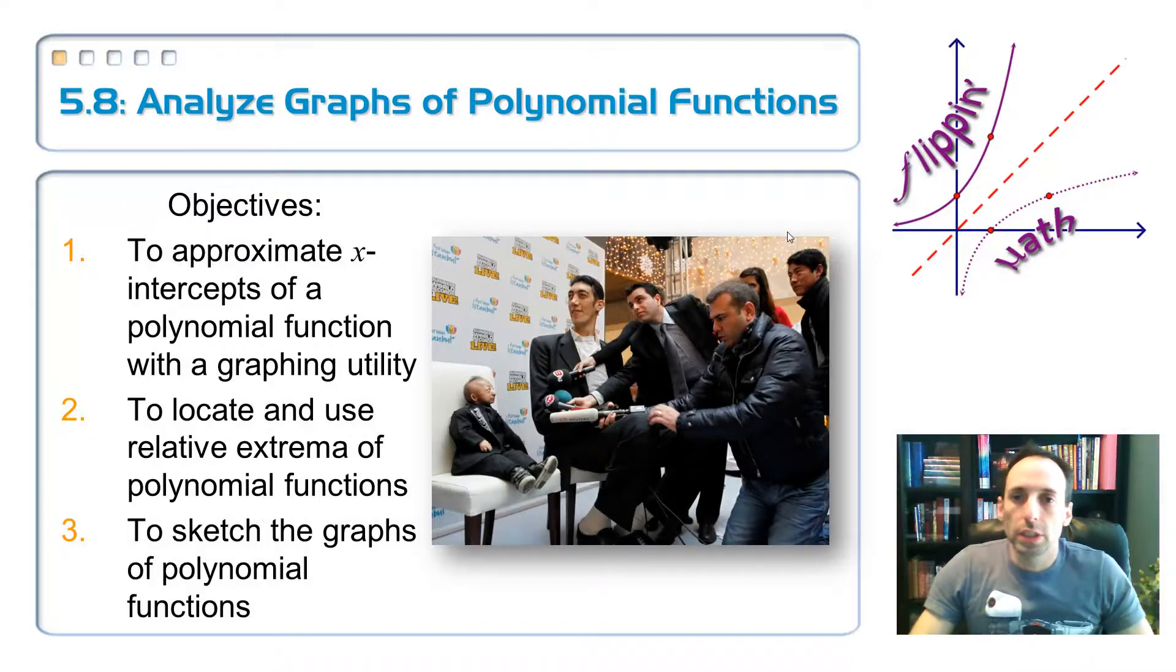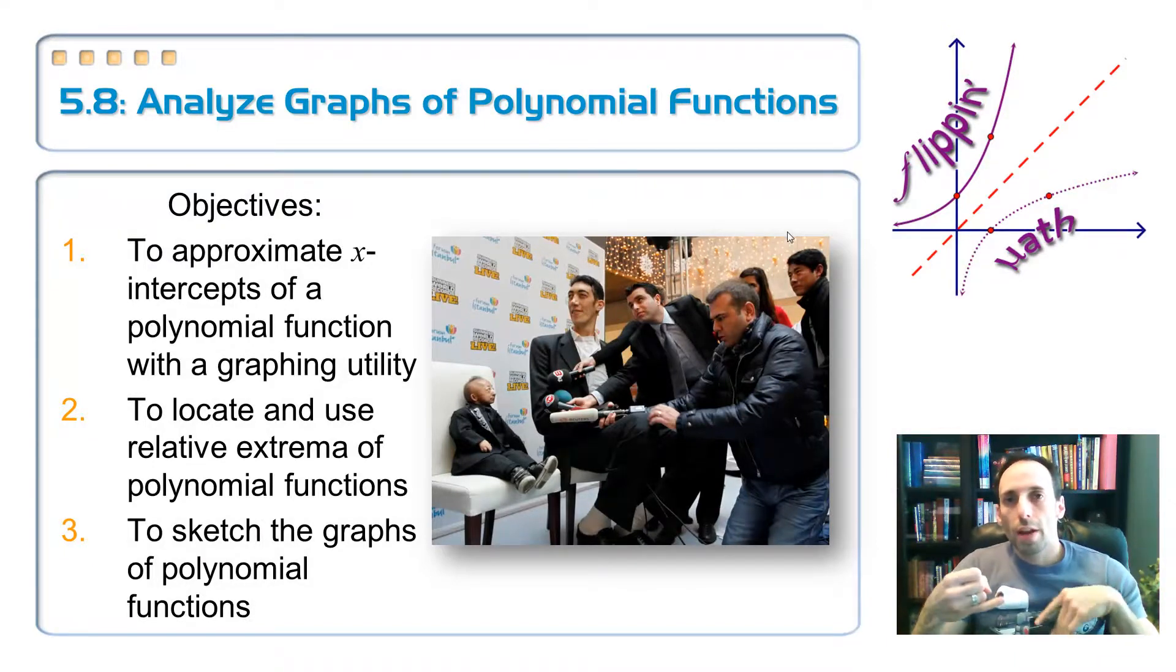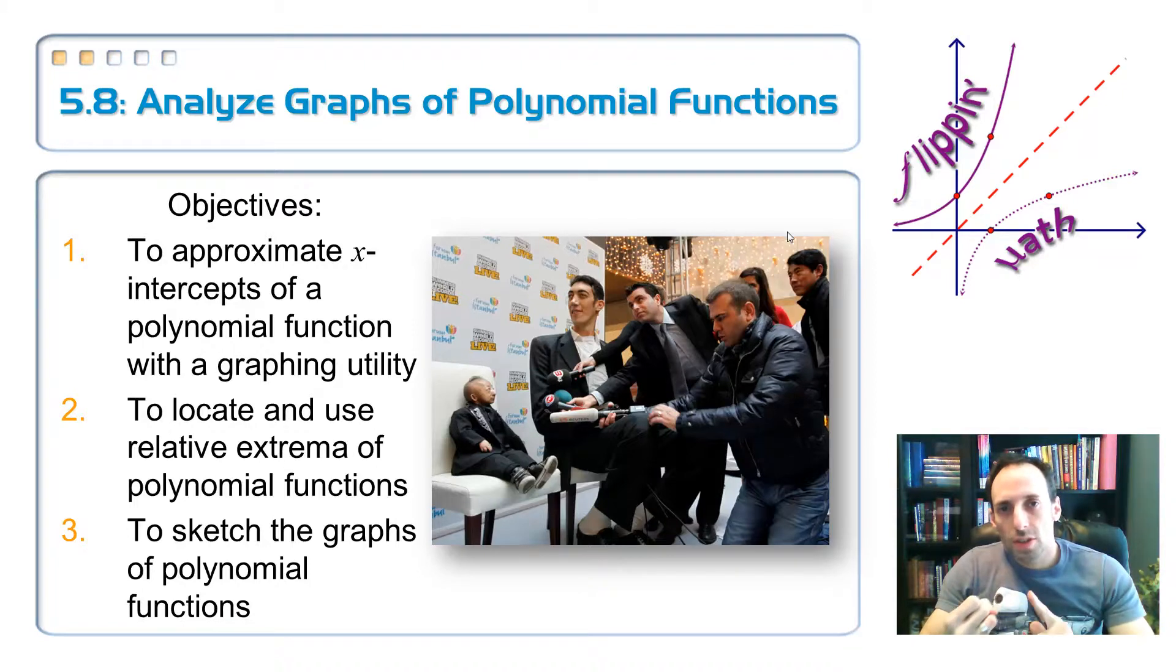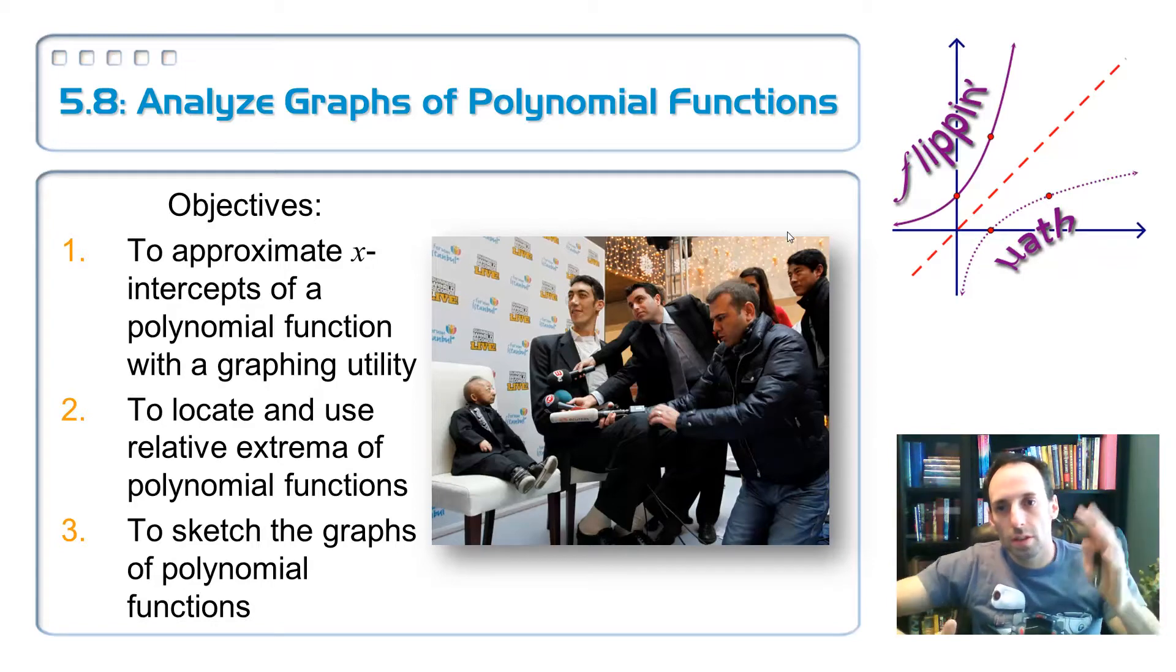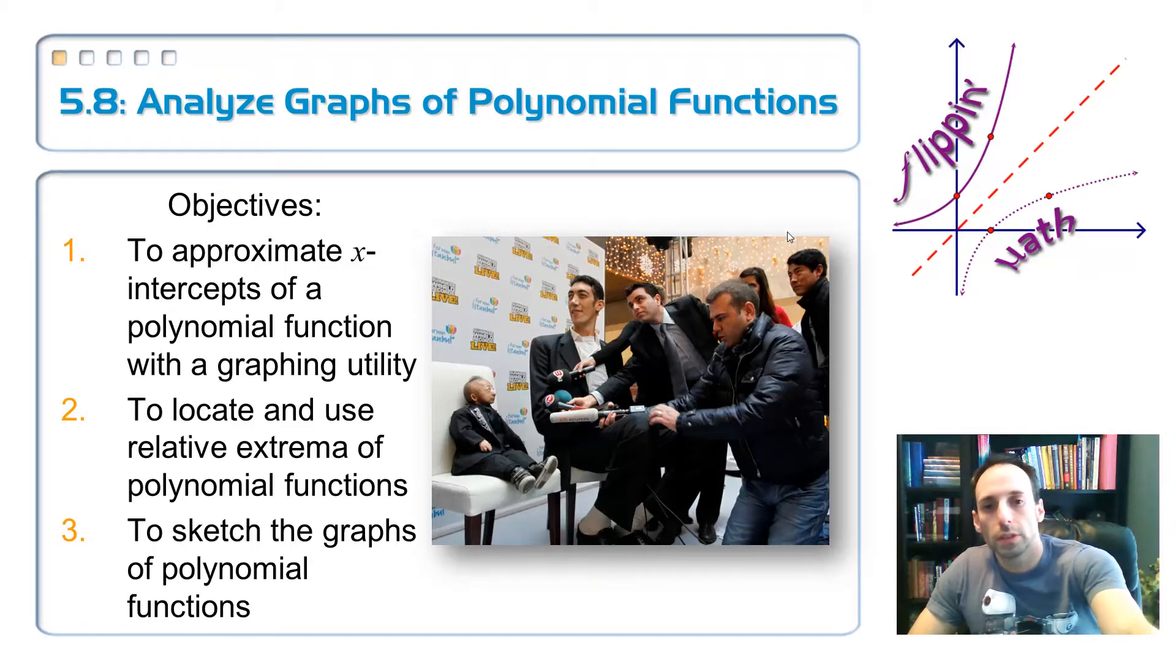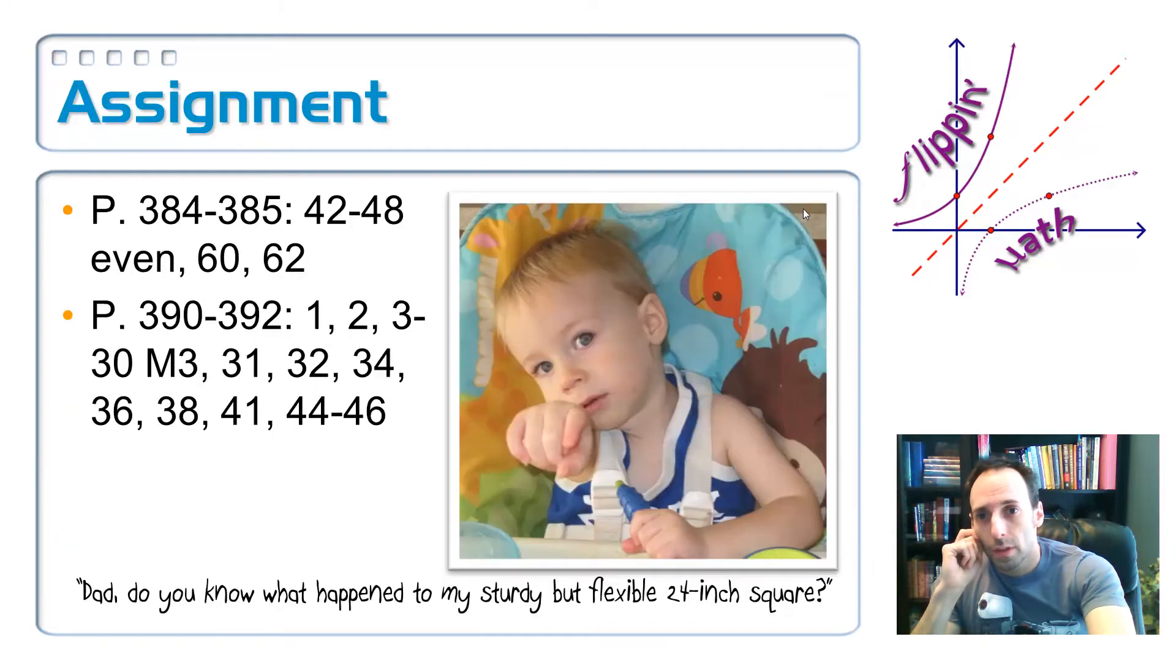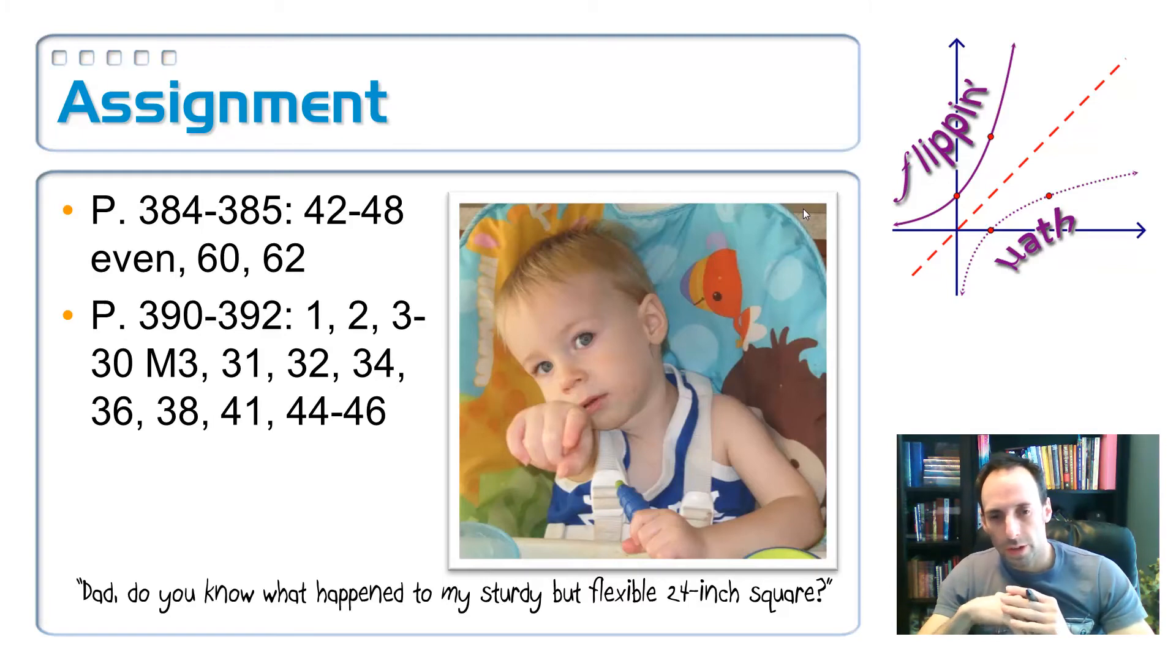That wraps up this lesson on analyzing the graphs of polynomial functions. We were able to use our graphing calculator to approximate the locations of those x-intercepts, the zeros. We used the graphing calculator also to find out our local mins and max points. And those are the little humps either like this or like that. And then finally graphing the polynomial functions by hand, just sketching the graphs out. So here is, again in this picture, you have the world's smallest man, living man, and the tallest man in a little interview. Okay, so here's your assignment. What's that Rowan? Do you know what happened to my sturdy but flexible 24 inch square? I don't know.